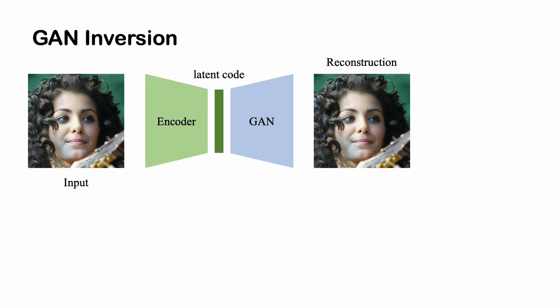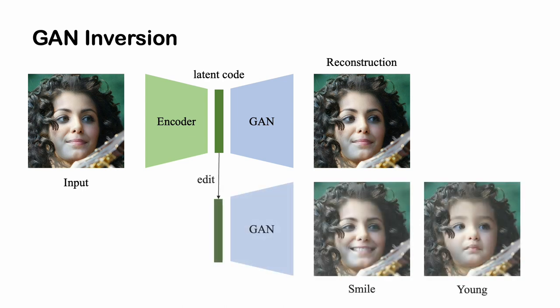The goal of our work is to embed a real-world image into a pre-trained GAN and then reconstruct it. If we edit the latent code, we can generate edited images. We perform smile and age editing here.